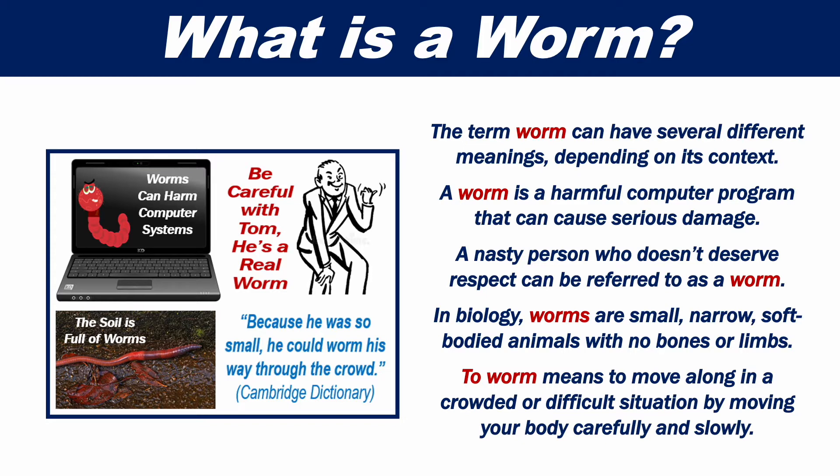In biology, worms are small, narrow, soft-bodied animals with no bones or limbs. To worm means to move along in a crowded or difficult situation by moving your body carefully and slowly.